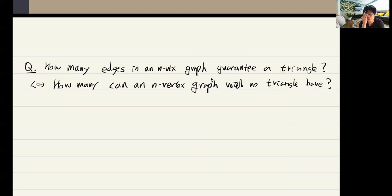If we are asked such a question, the first thing to try is whether there is some easy example which has lots of edges but has no triangle. One possible example: if you consider a bipartite graph, then a bipartite graph obviously has no triangle.